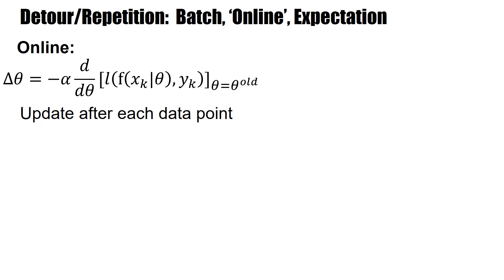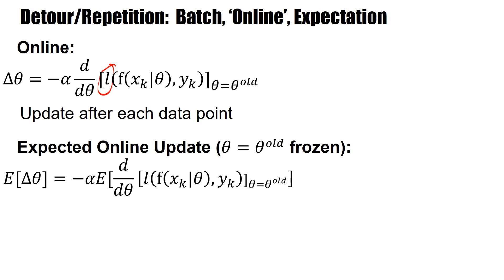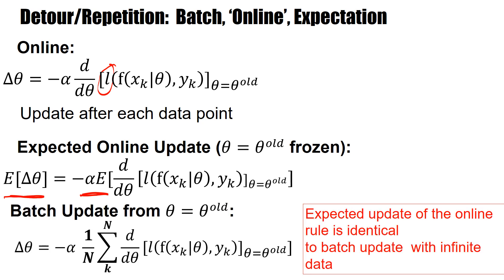I just remind you, this is the standard procedure that we have seen in other lectures. An online update rule uses the local loss for single data point, and we update after each data point. If you take the expectation of the online update, we have the expectation on the gradient. And a batch update is an approximation to the expectation. And this approximation is good if I have a large amount of data. In other words, if this is a big sum.